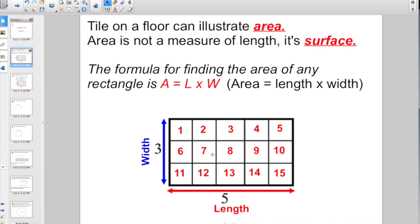Tile on a floor can illustrate area. If you take a look at this rectangle we have here, anytime you're going to fill this area with new carpet, new tile, or some sort of new flooring, you've got to figure out the area of it. The formula for finding the area of a rectangle is A = L × W, which means the area equals the length times the width.